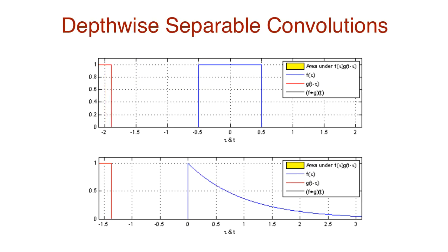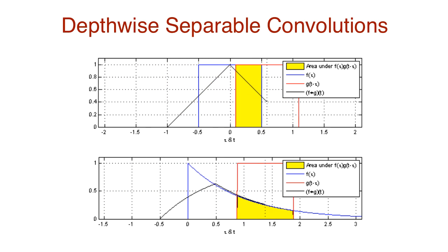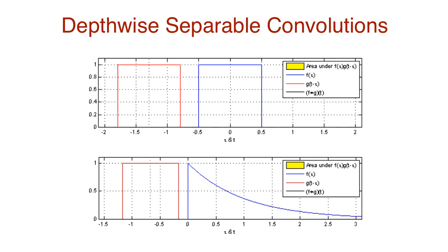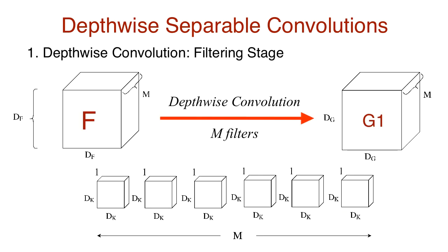Let's start with depth-wise separable convolutions. They were introduced in an architecture for neural networks called Xception. Basically, it's a faster method of performing convolution with significantly less multiplication operations. This becomes more important while dealing with large networks with billions of parameters. Essentially, depth-wise separable convolution is performed in two phases: a depth-wise convolution phase followed by a point-wise convolution phase.